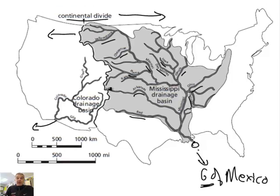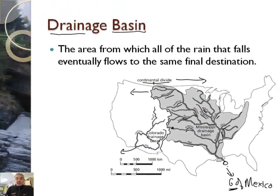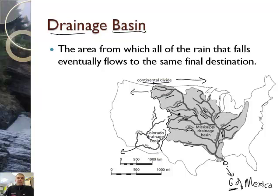The interesting thing about where we live is we live very close to the Continental Divide. It's just up over by Breckenridge — about an hour by car. So if you drop some water on one side, it sends water one way, and if you drop water on the other side, it goes in the other direction.